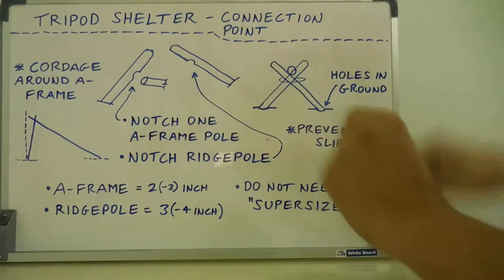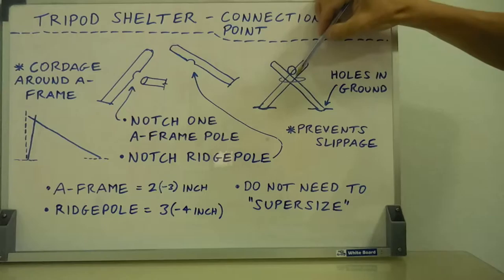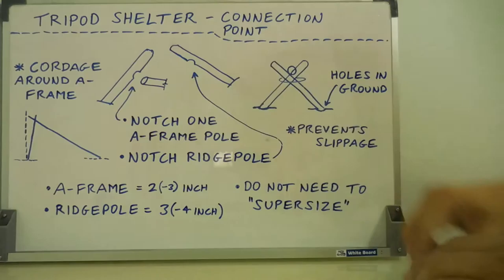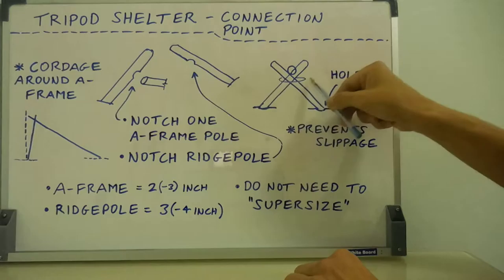And then you can notch your ridge pole towards the end that's going to sit down pretty much just like this. You've got your ridge pole sitting notched into one of the A-frame poles. So those notches on one A-frame pole and the ridge pole gives you a nice connection like that.